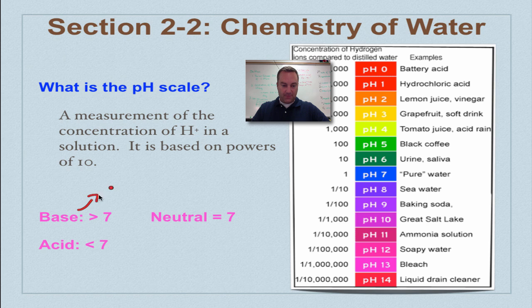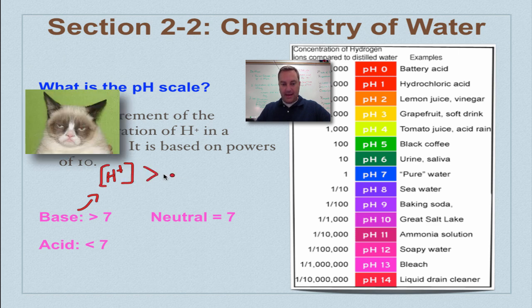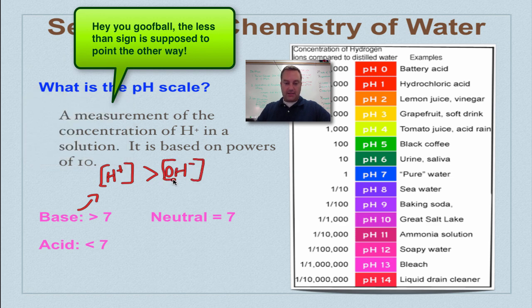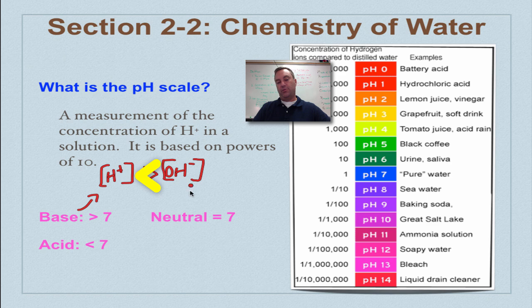In a base, your hydrogen ion concentration is going to be less than your hydroxide ion concentration. In other words, you got more of these than you do of those. And that puts your pH above 7.